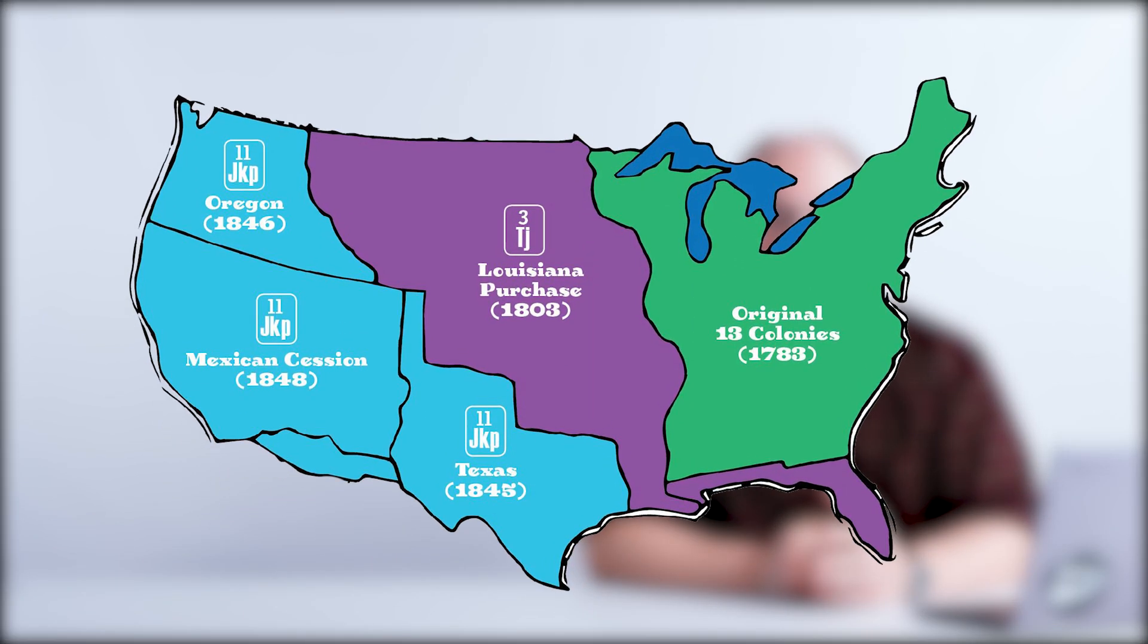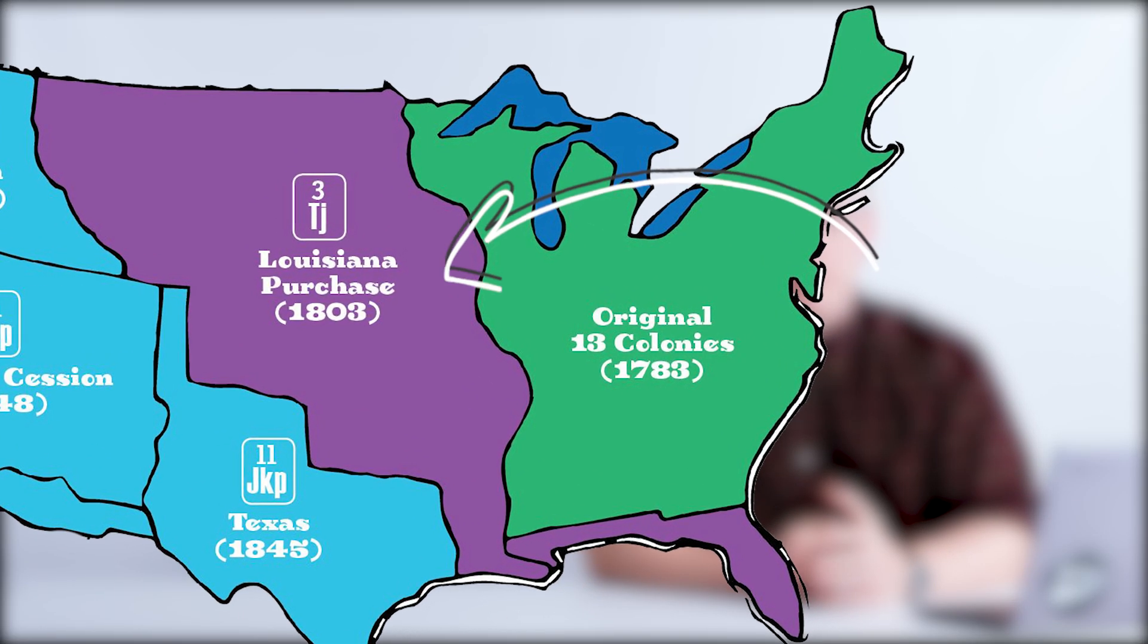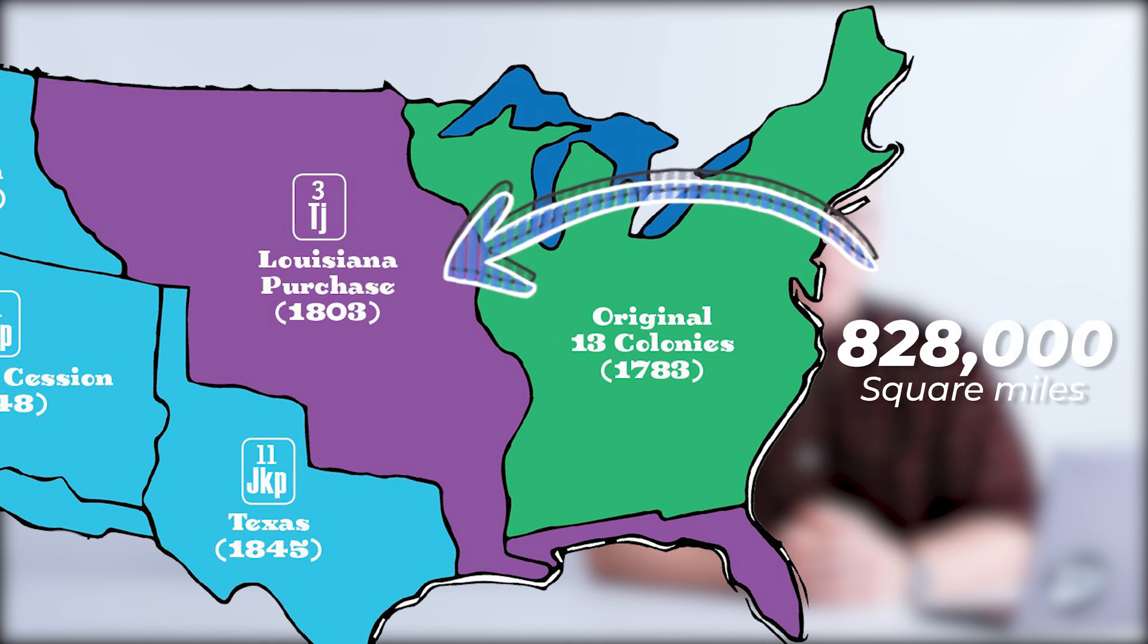One of the largest accomplishments during his presidency was the purchase of the Louisiana Territory from France. Adding 828,000 square miles of land, this purchase nearly doubled the young nation.